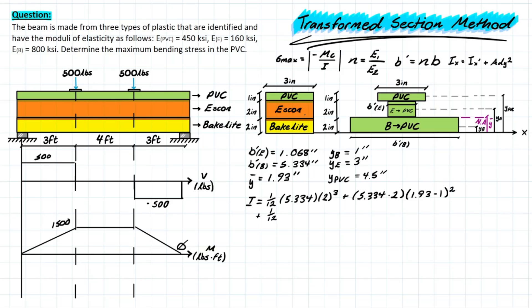On to the next part. We do the Escon transformed. So we're using 1.068, and that's times 2 to the power of 3. We are going to be taking that area as well, times 2. And doing a similar thing, we now have 3. And we're taking away that neutral axis distance, which is 1.93 once again. And that's squared.